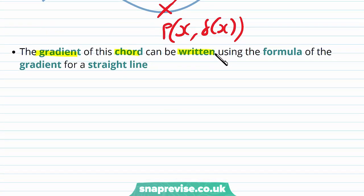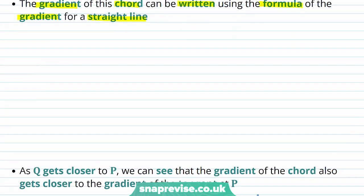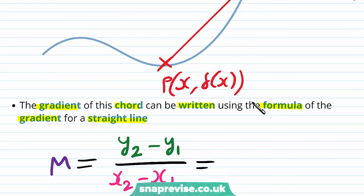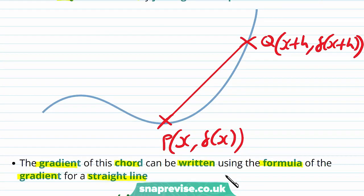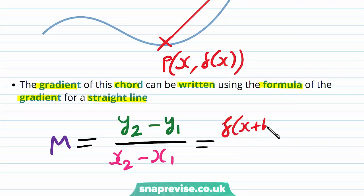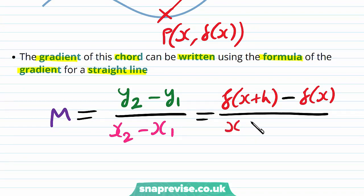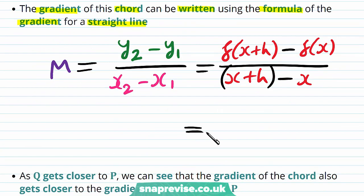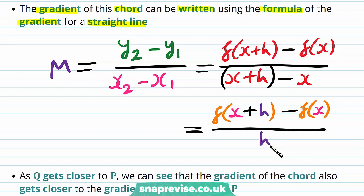The gradient of this chord can be written using the formula for the gradient of a straight line: m = (y₂ - y₁) / (x₂ - x₁). Taking P as (x₁, y₁) and Q as (x₂, y₂), we get y₂ = f(x+h), y₁ = f(x), x₂ = x+h, and x₁ = x. By simplifying the denominator, we get the gradient of the chord as [f(x+h) - f(x)] / h, since x+h minus x is just h.